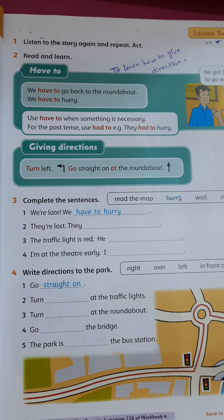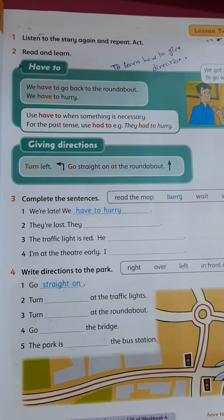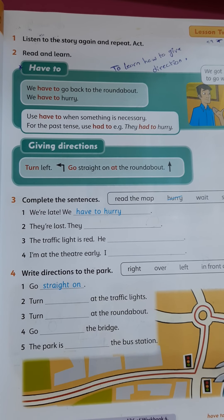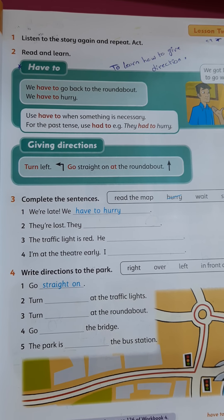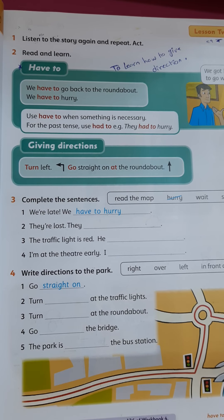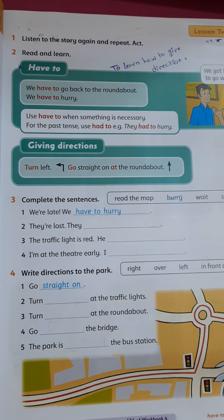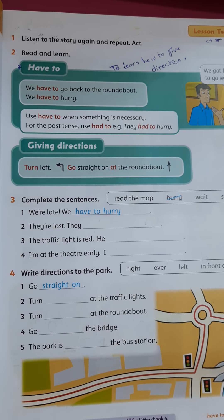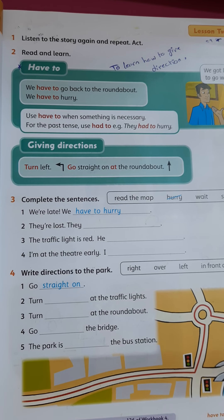First, we learned how to give directions — هاي أول شيء أخدناها في درسنا، كيف نعطي الـ direction. And we use 'have to' and 'has to' to talk about laws and matters that we must follow. يعني منستخدمهم علشان نتكلم عن القوانين والأمور اللي لازم نتبعها.